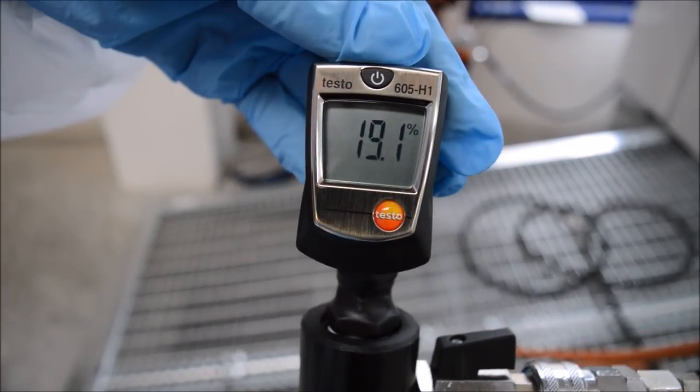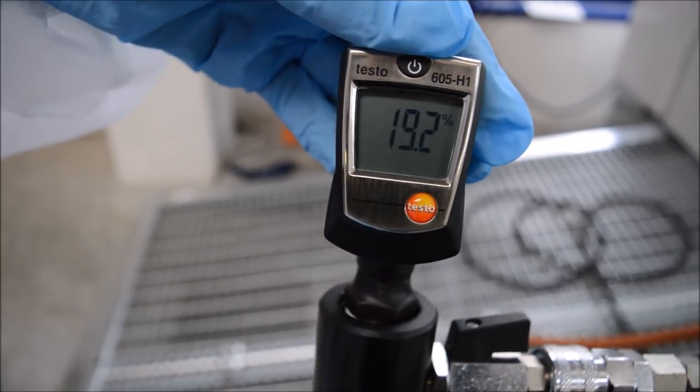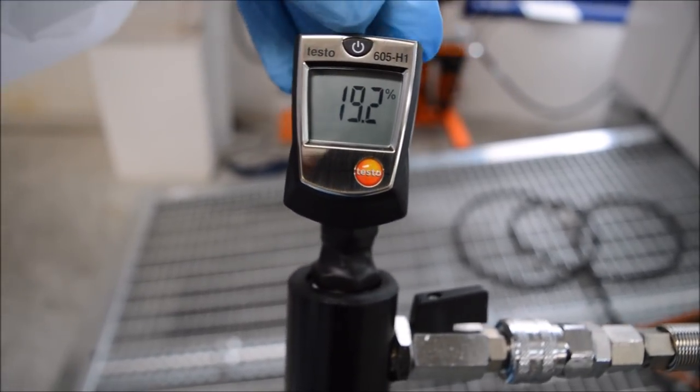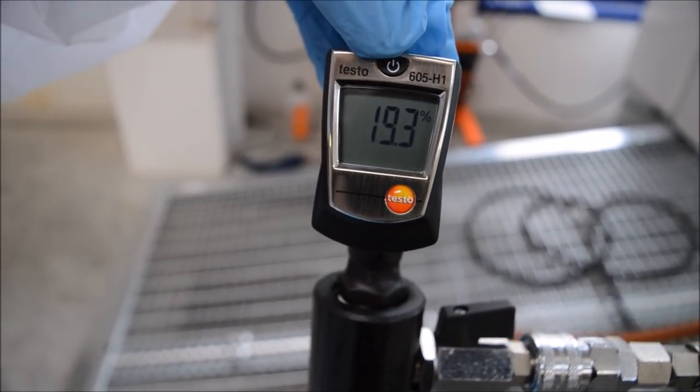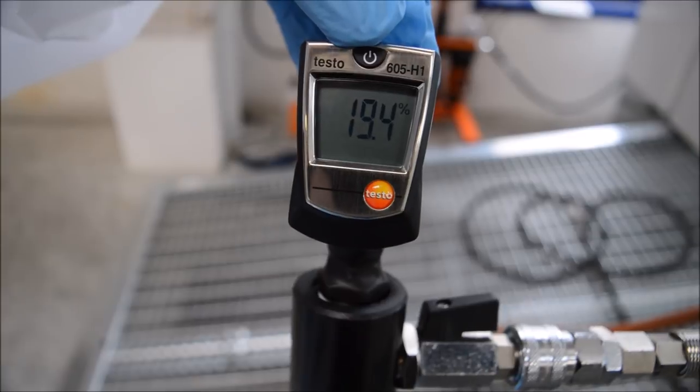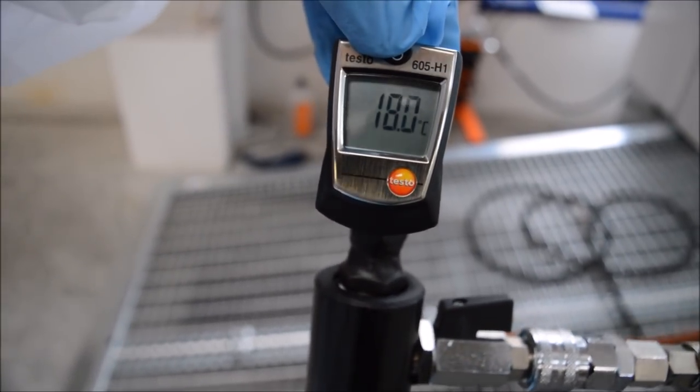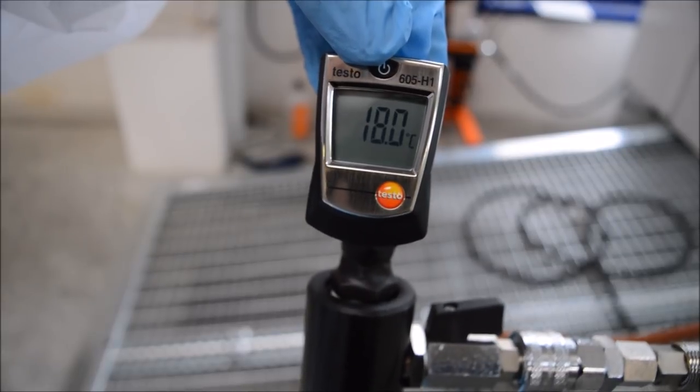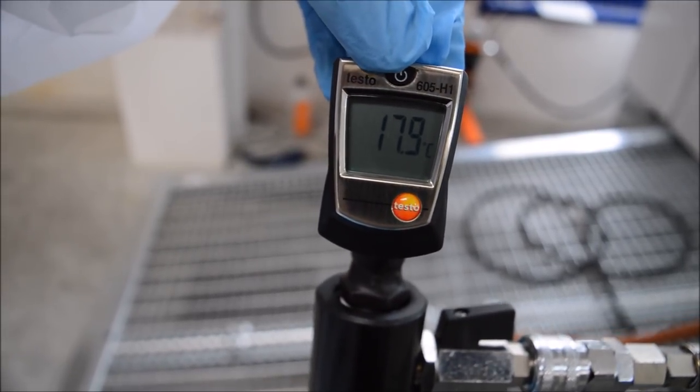We're also going to check the airline temperature and humidity. Currently we have 19.2 percent humidity through our airline, which is going to be lower than the environment we're spraying in because we do have air dryers passing air to our airline. Temperature-wise is around 18 degrees, which may drop down slowly to around 17 degrees.